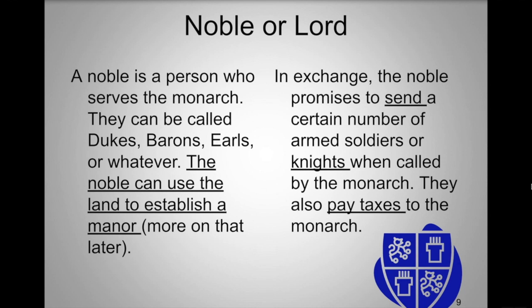The next tier in the hierarchy are nobles and lords — often called dukes, barons, or earls — who serve the monarch and are the rulers of local territories. They use land granted by the monarch to establish a manor: essentially a farm and community supporting the local lord, who in turn supports the monarch. In exchange, nobles must send soldiers whenever the monarch calls and pay taxes, with the manor system generating the income to do so.